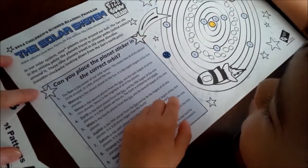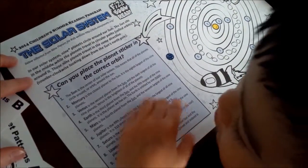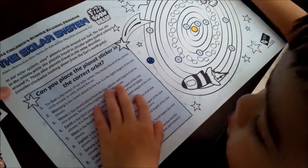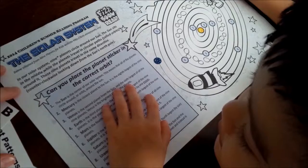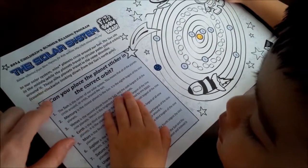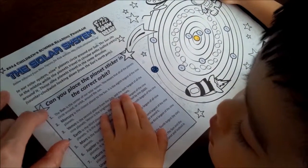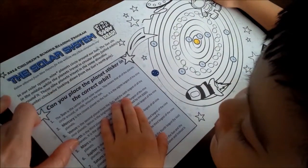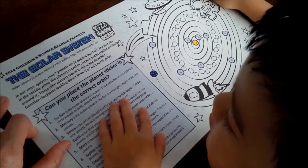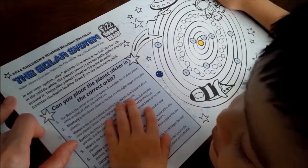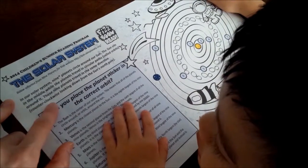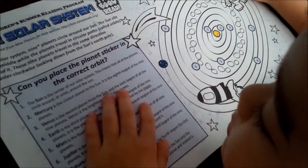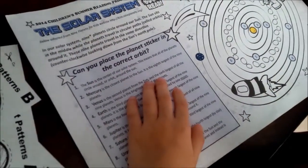In the solar system, nine planets circle around our sun. Our sun sits in the middle while the planets travel in circular paths around it. These nine planets travel in the same direction, counterclockwise looking down from the sun's north pole.